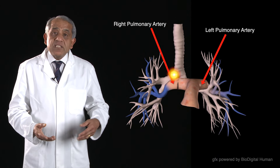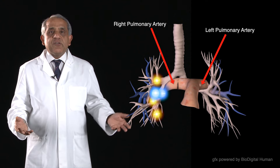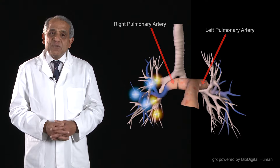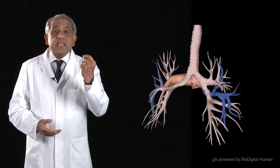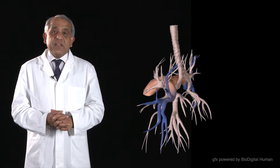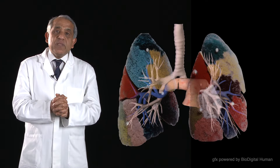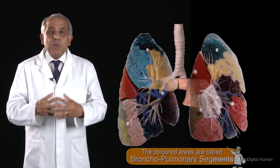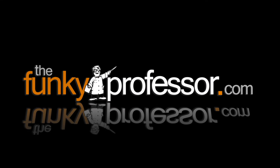The right main bronchus breaks up into three lobar bronchi, and the right pulmonary artery breaks up into three lobar branches, and so on and so forth. Each segmental bronchus is accompanied by a segmental branch of the pulmonary artery, and together they supply a specific segment of lung within a lobe. This unit is called a bronchopulmonary segment.